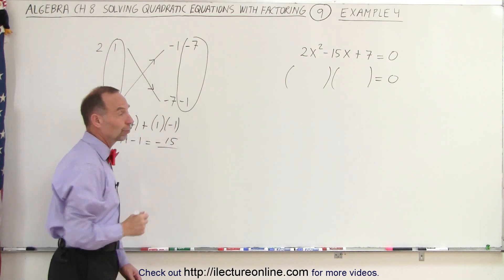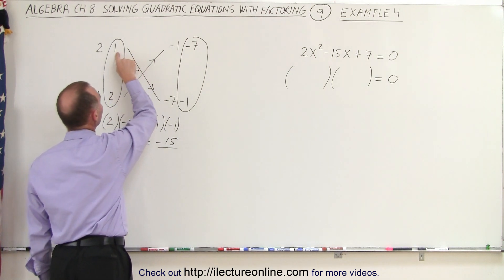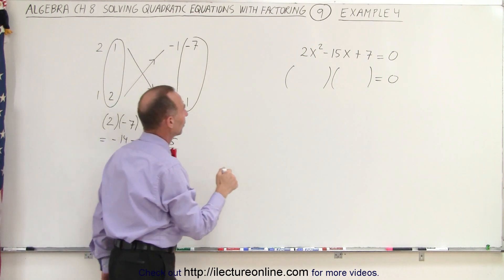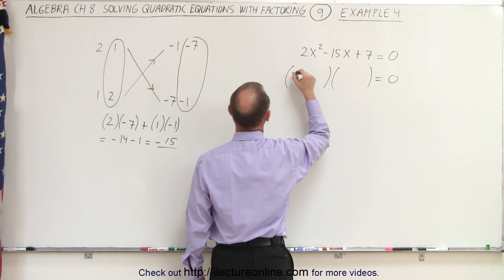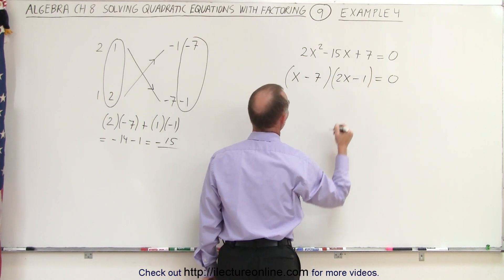And of course, that's the middle term we're looking for. That's the right combination. So we can say that the factored form would be x plus negative 7, 2x minus 1. So that gives us x minus 7 and 2x minus 1.